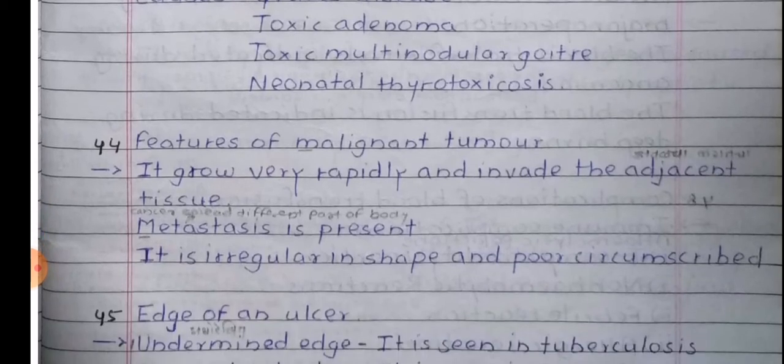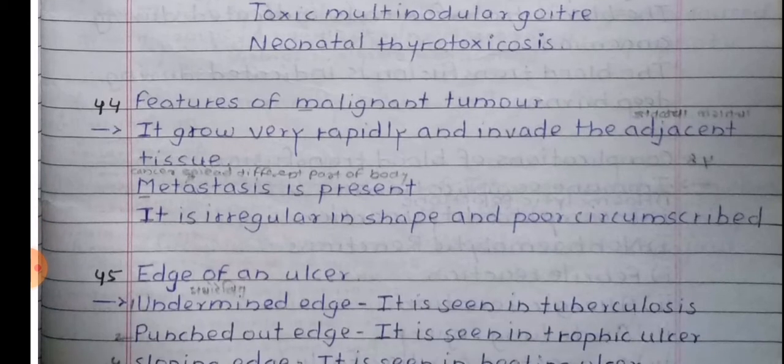Features of a malignant tumour: It grows very rapidly and invades the adjacent tissues. Metastasis is generally present in all malignant tumours. It is irregular in shape and poorly circumscribed.